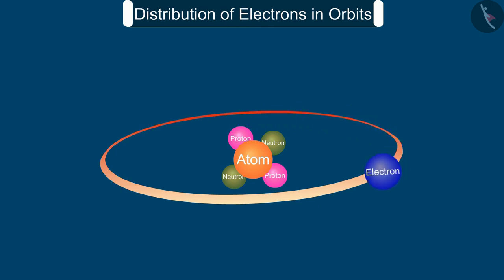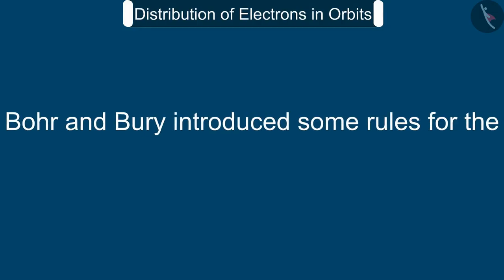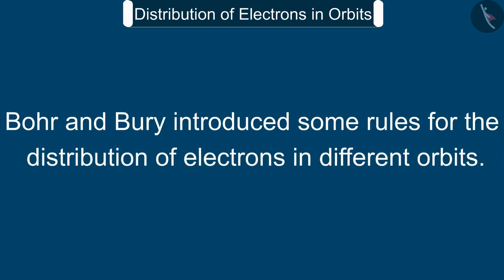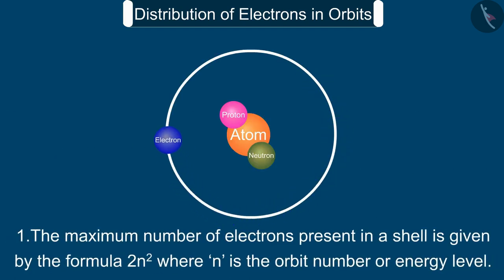Let us now see how electrons are distributed in different orbits of an atom. Bohr and Burry introduced some rules for the distribution of electrons in different orbits. One, the maximum number of electrons present in a shell is given by the formula 2n² where n is the orbit number or energy level.